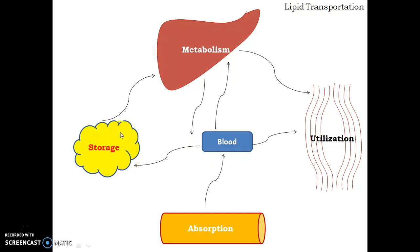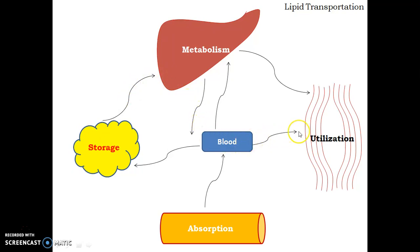Blood also carries triglycerides from the intestine for storage into the adipose tissue. In times of need, these triglycerides are transported to the liver for metabolism, and blood can directly carry the triglycerides into the muscle for utilization.